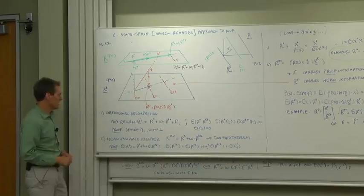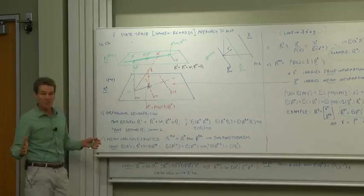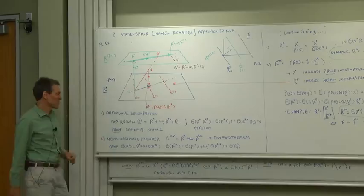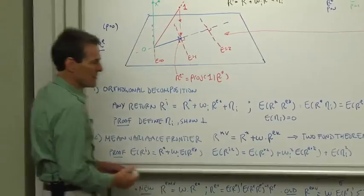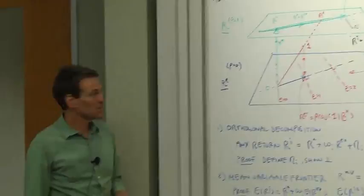What's the variance? The variance is variance of this, plus variance of that, plus variance of this, plus all the cross terms. No, the cross terms all went to zero. These are orthogonal to each other. That's what makes this so pretty. If you want to minimize the variance, holding constant the mean, just get rid of that guy there. Set the eta to zero. We've just proved our theorem. The mean variance frontier is r star plus w r e star.